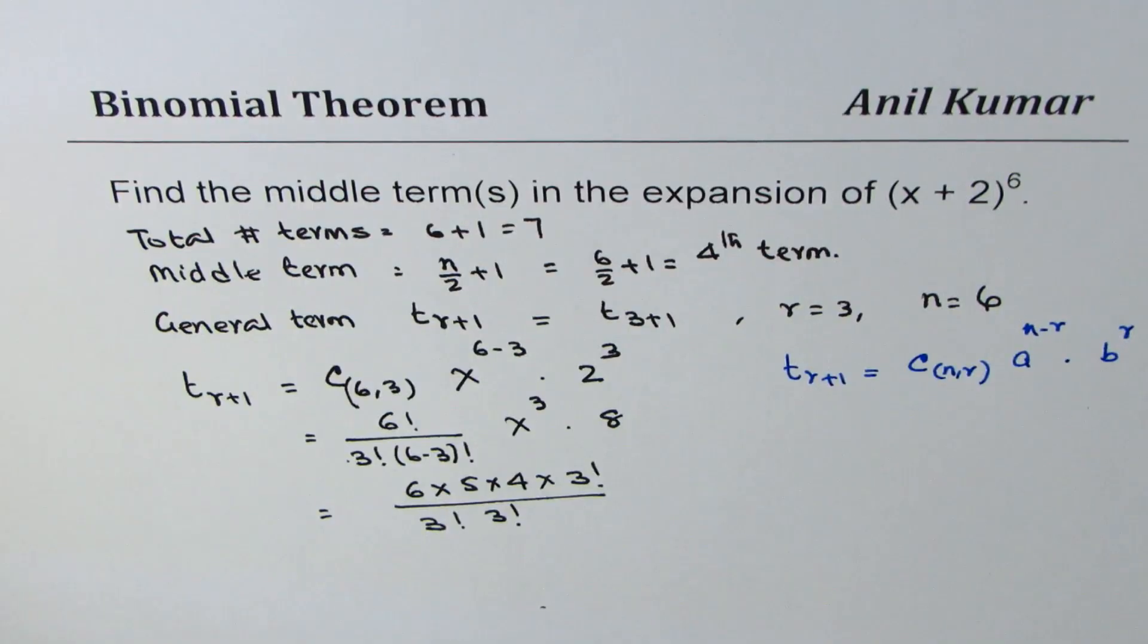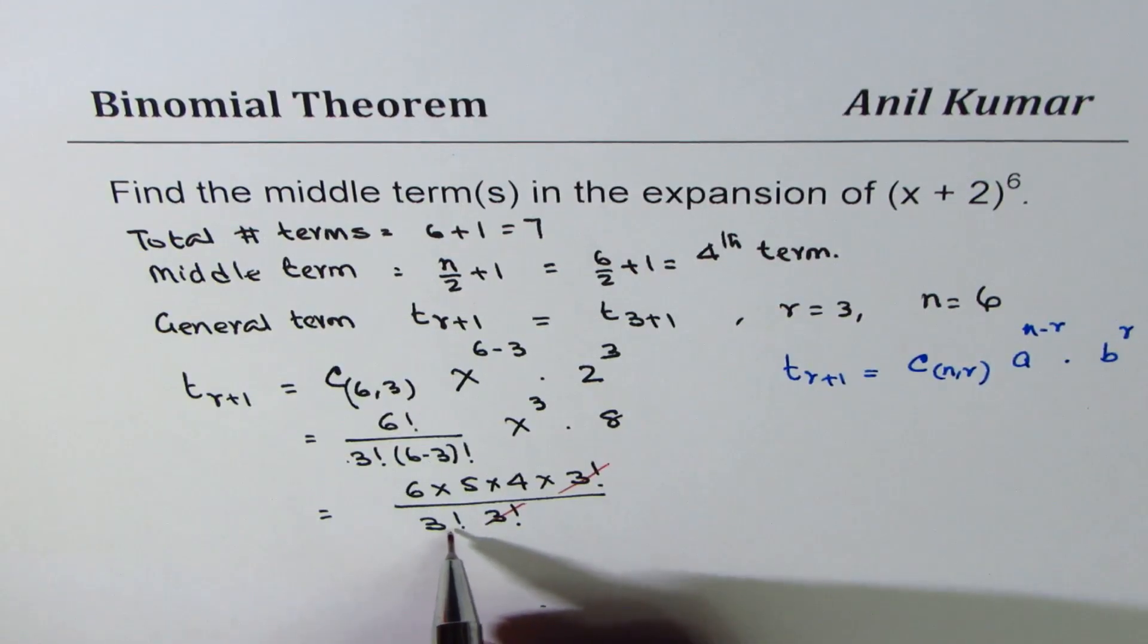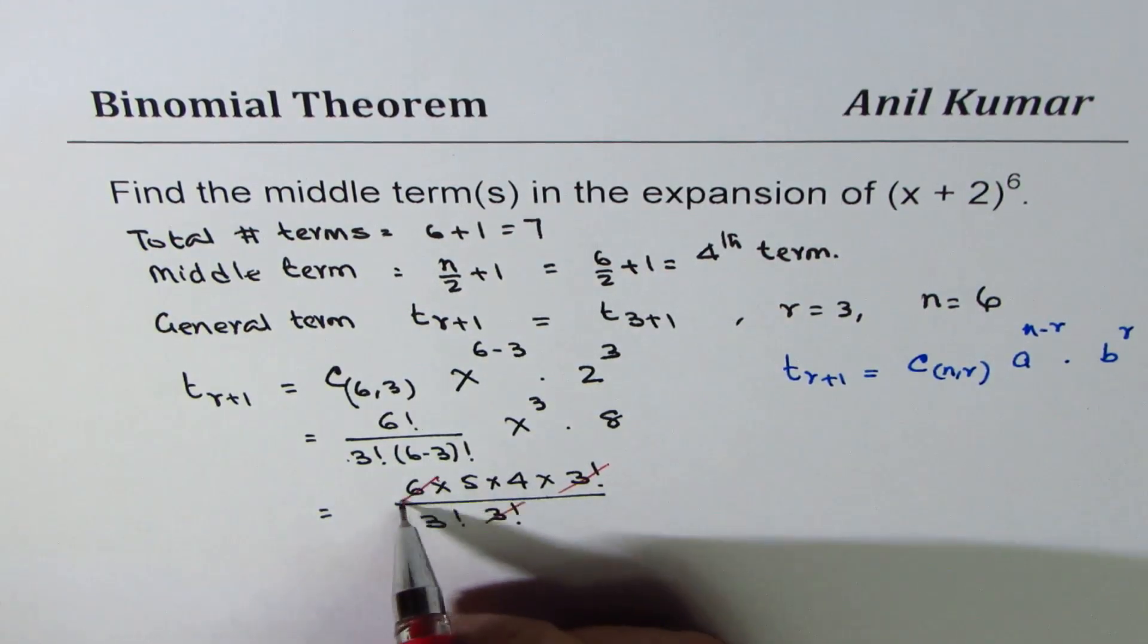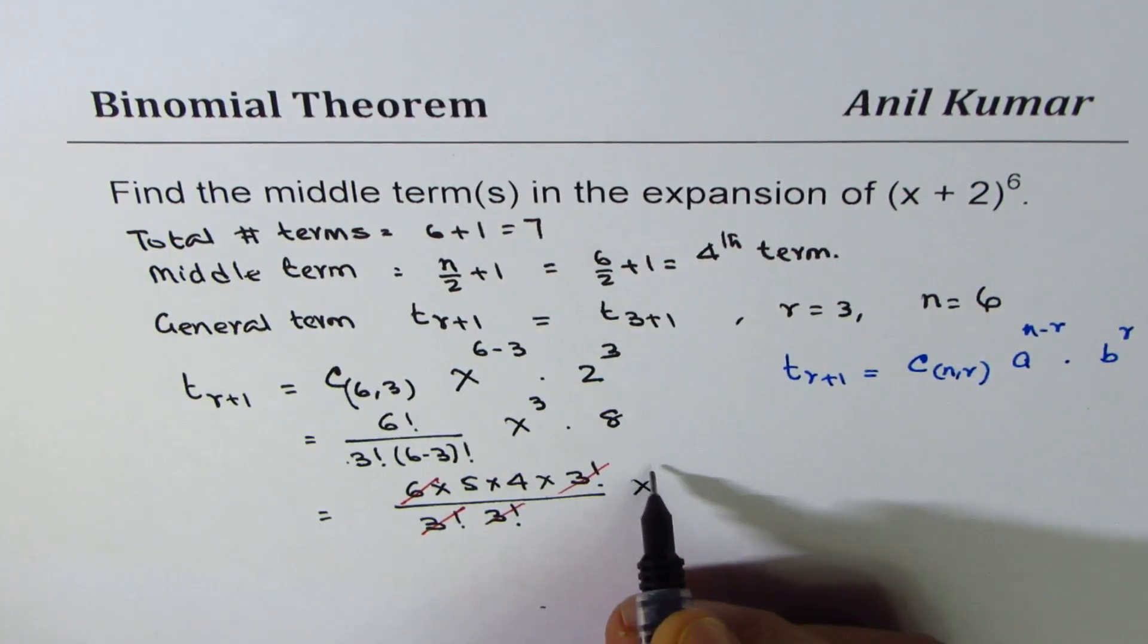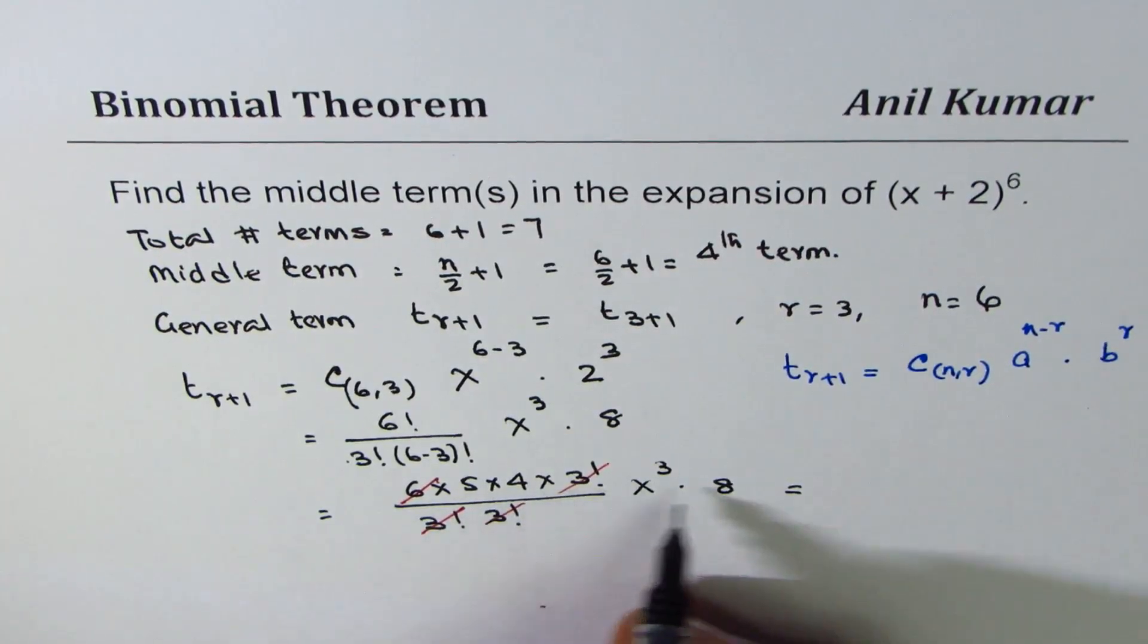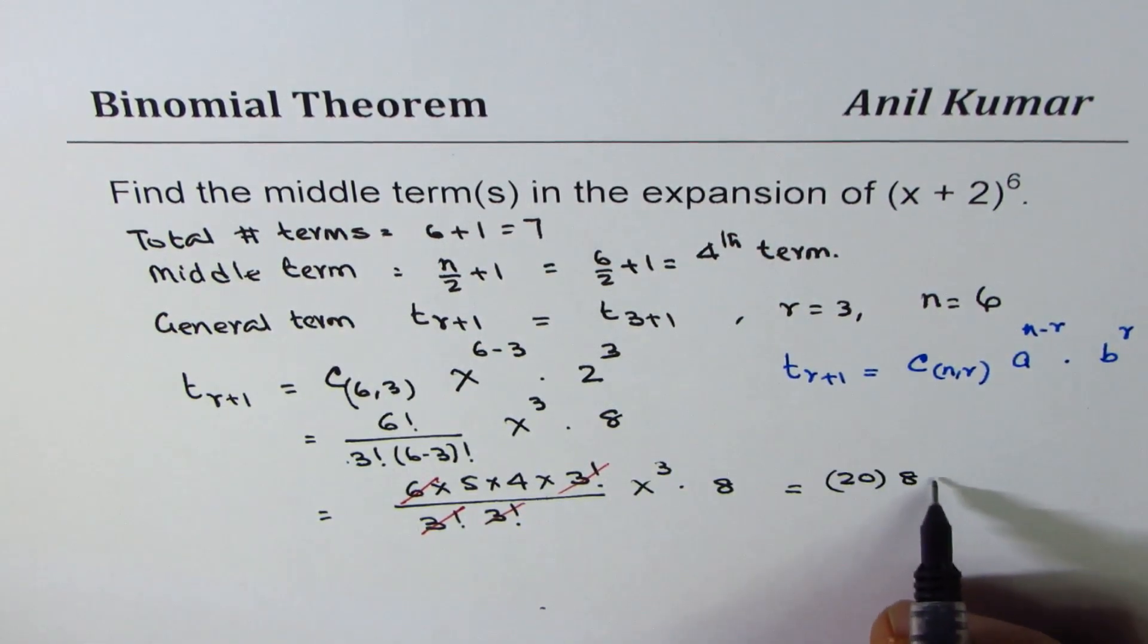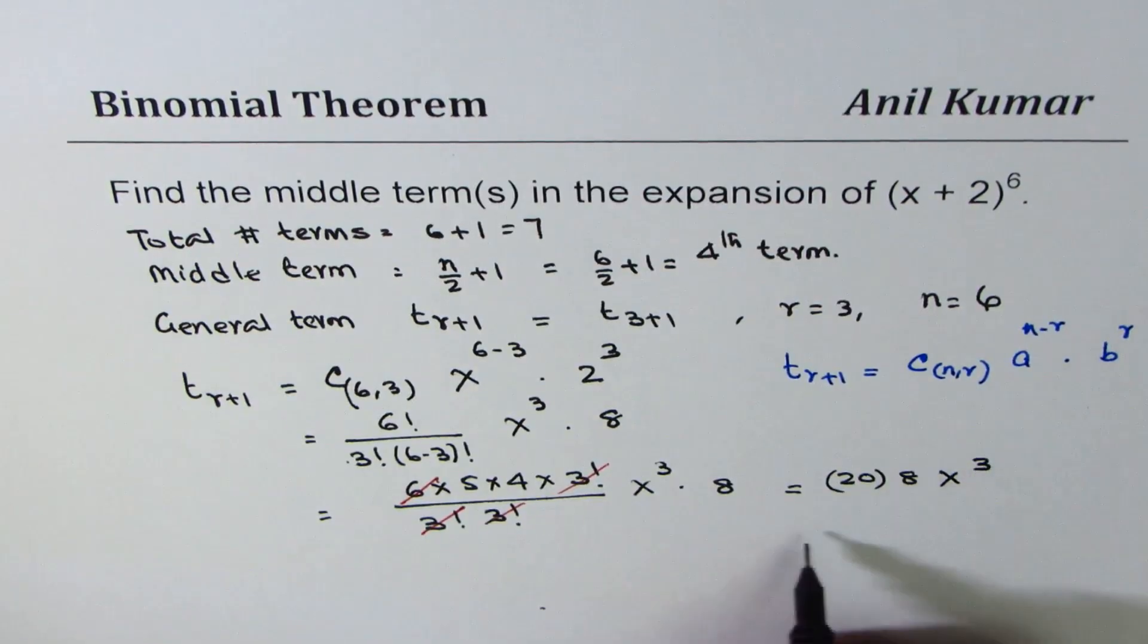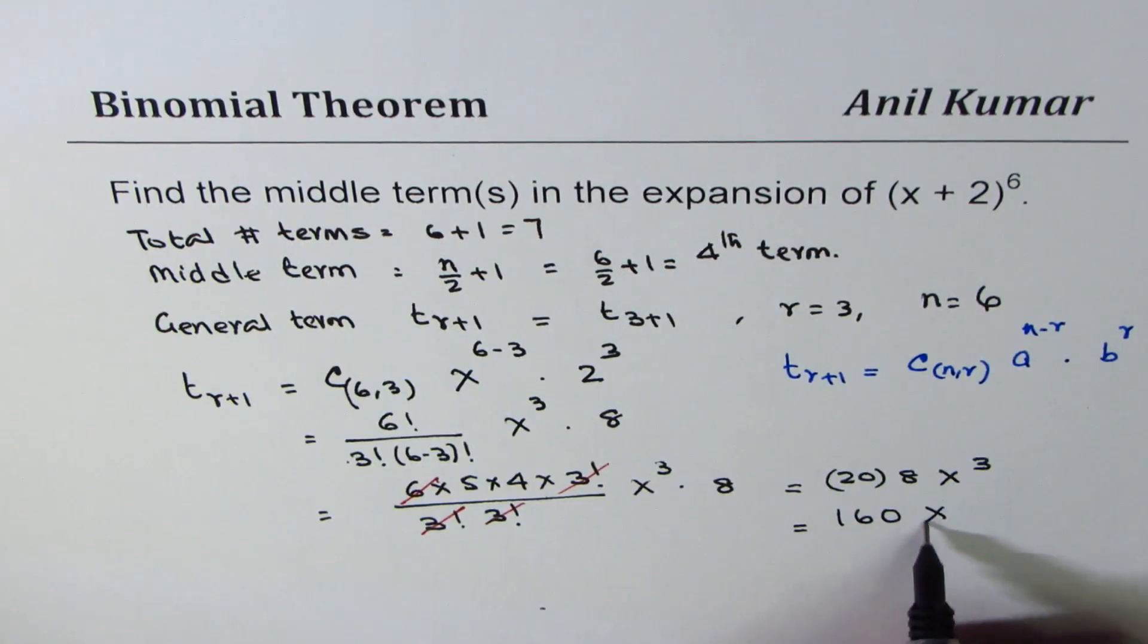3 factorial is 3 times 2, which is 6. We get 20 there, and we already have x cubed times 8. So we get 20 times 8 x cubed, or 160 x cubed.